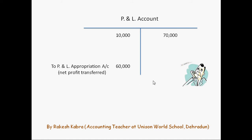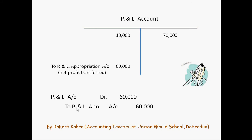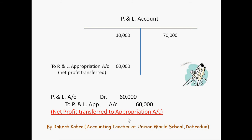We can easily compose the entry for this purpose. This 60,000 is on the debit side of P&L account, so in the entry it will be debited and it is transferred to P&L appropriation account: net profit transfer to appropriation account. After passing this entry, P&L account is closed — total of both sides are equal, 70,000 on the credit side and 70,000 on the debit side. But at the same time a new account is opened and the name of that new account is profit and loss appropriation account.